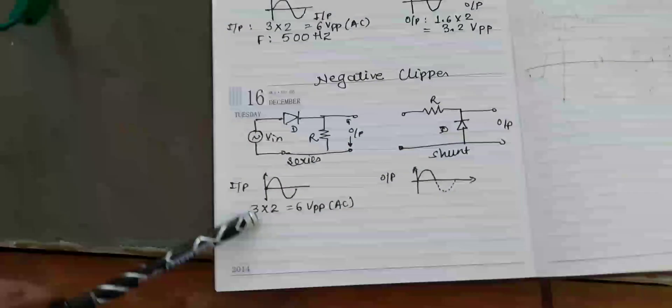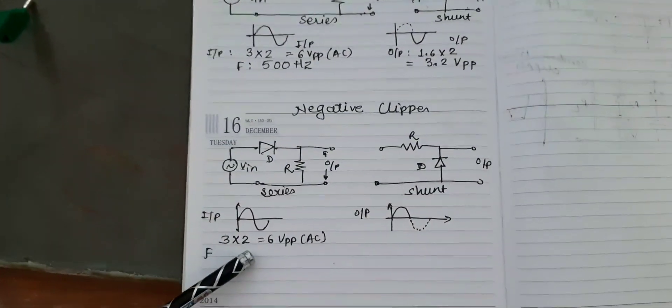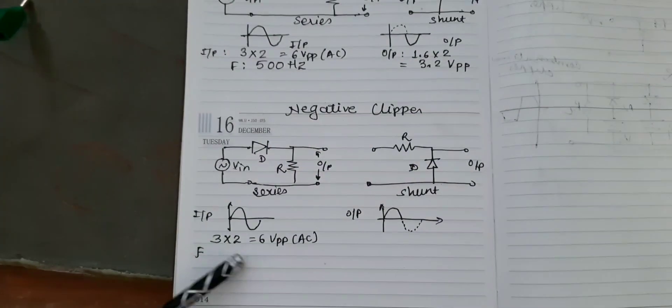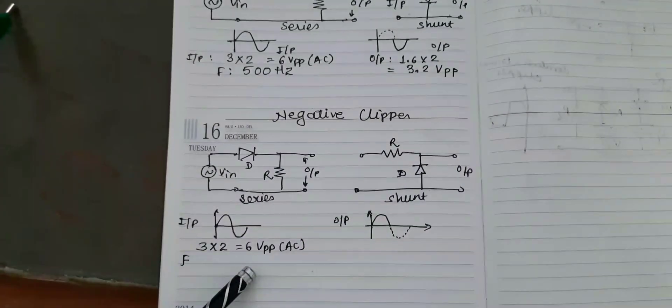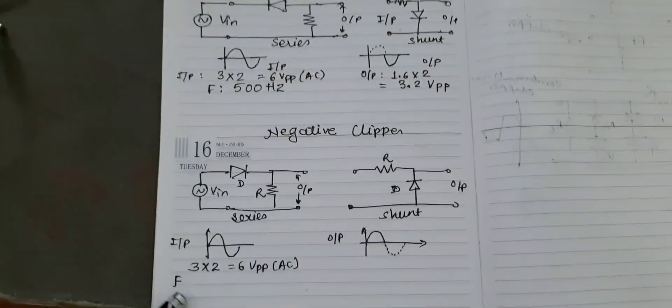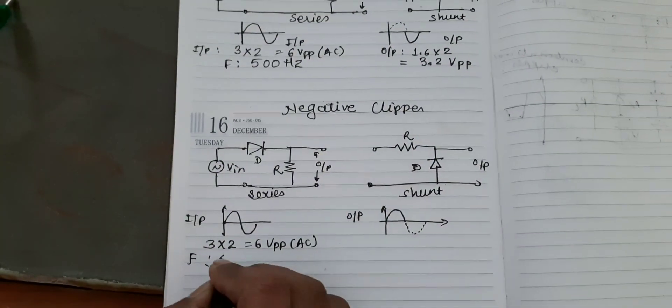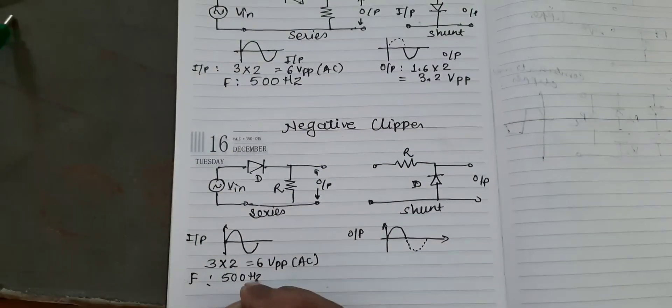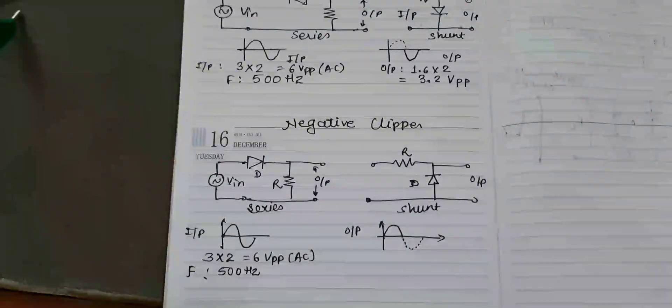I have written: number of divisions is 3, multiplied by 2, which is the multiplying factor as per the CRO. So the peak-to-peak voltage is 6 volts and the frequency is 500 Hz. This is the input using the function generator.